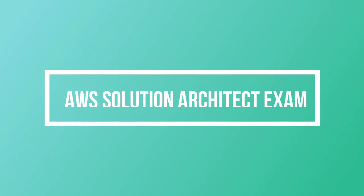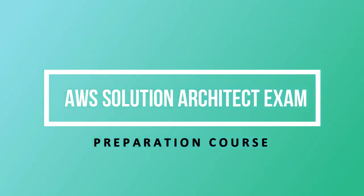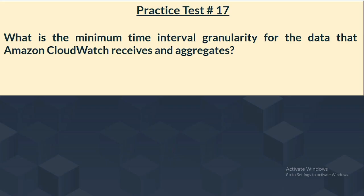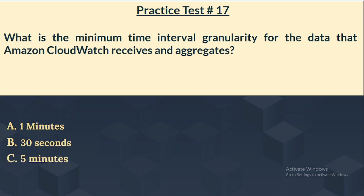The next question: What is the minimum time interval granularity for the data that Amazon CloudWatch receives and aggregates? Option A: 1 minute. Option B: 30 seconds. Option C: 5 minutes. Option D: 10 minutes.